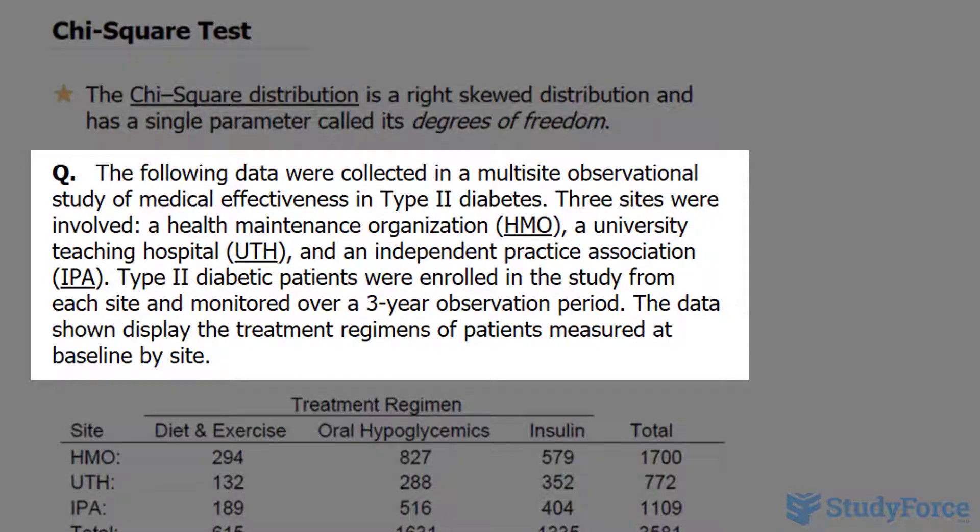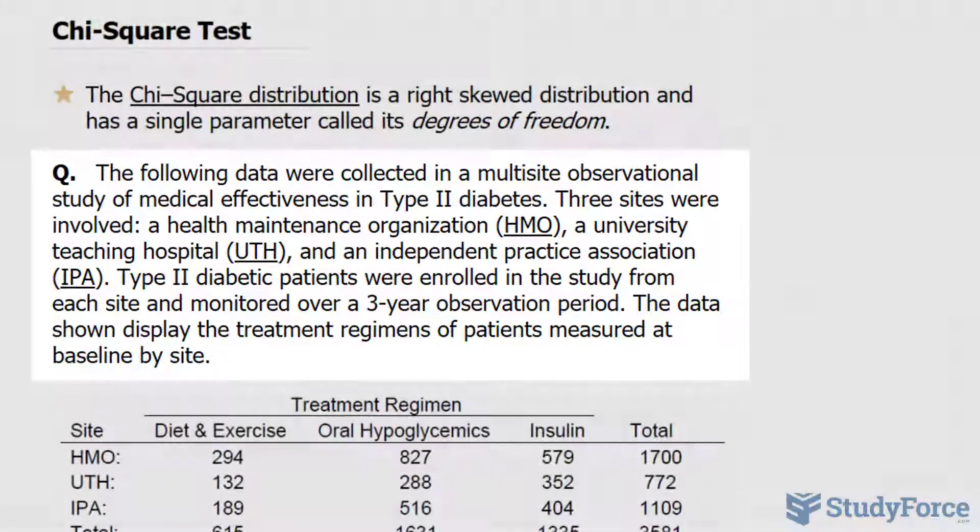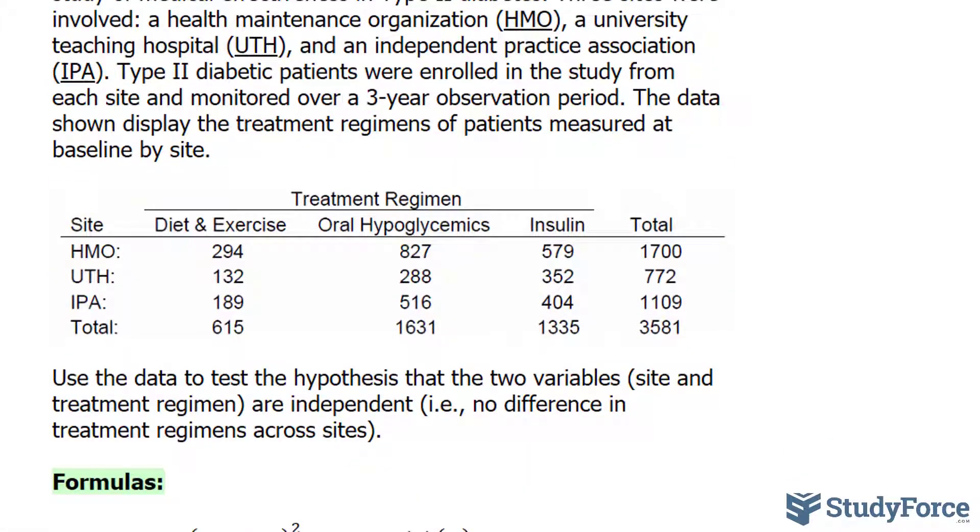the following data were collected in a multi-site observational study of medical effectiveness in type 2 diabetes. Three sites were involved: a health maintenance organization, a university teaching hospital, and an independent practice association. Type 2 diabetic patients were enrolled in the study from each site and monitored over a three-year observation period. The data shown displays the treatment regimen of patients measured at baseline by site.